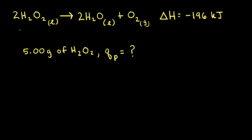As an example of a reaction, let's look at the decomposition of hydrogen peroxide to form liquid water and oxygen gas. The change in enthalpy for this reaction is equal to negative 196 kilojoules.